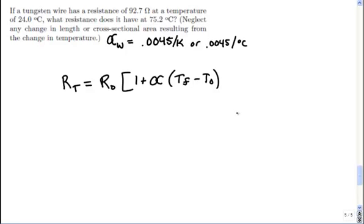This following question about this tungsten wire is similar to what we've seen in the past. It's basically the resistance changes due to a new temperature. Now why does this happen?